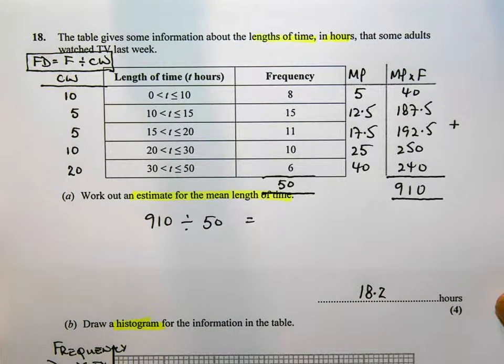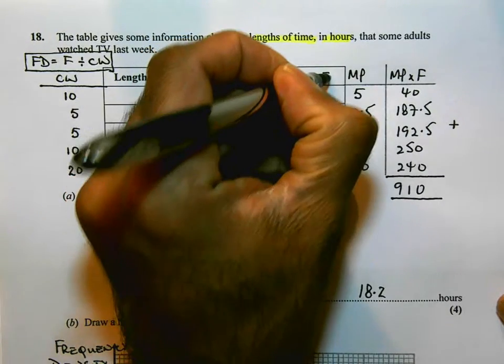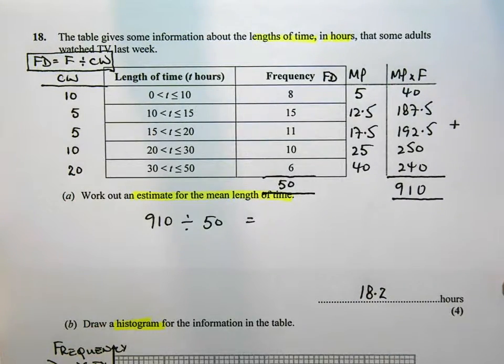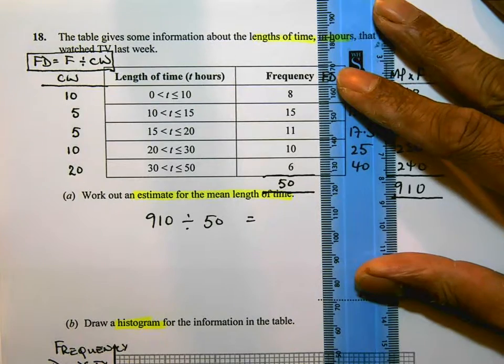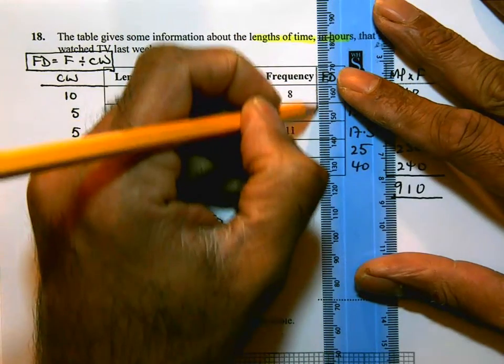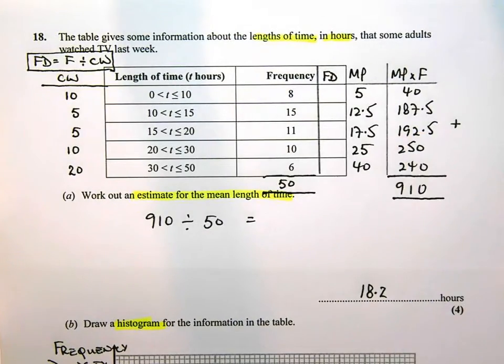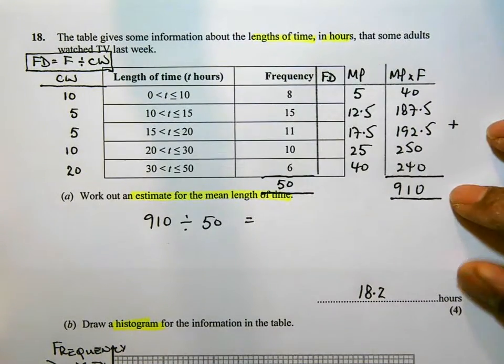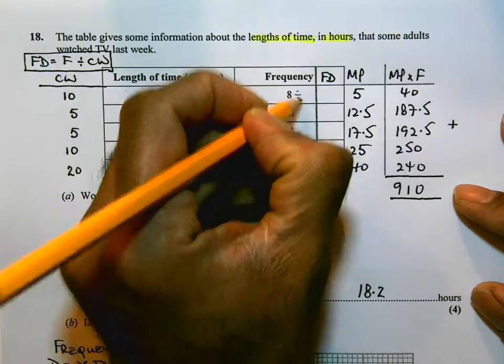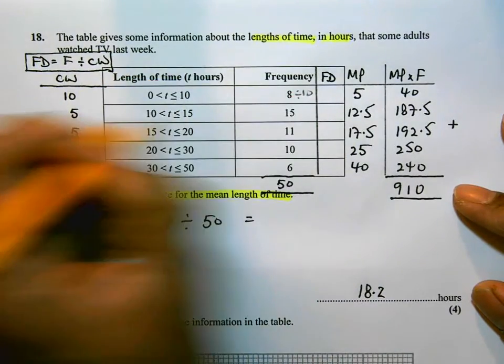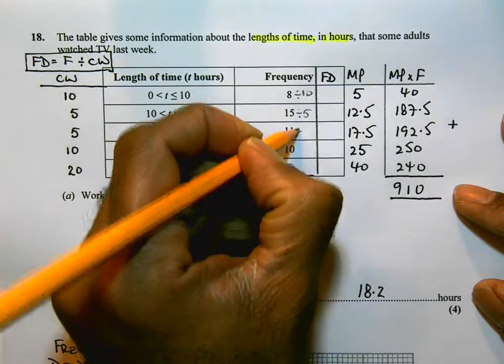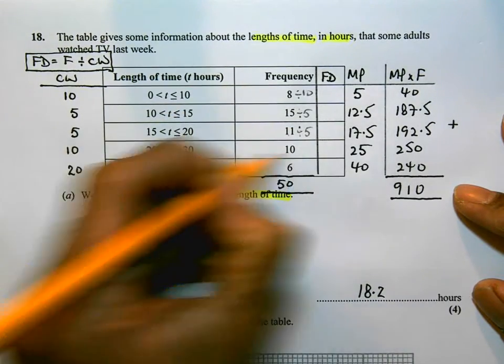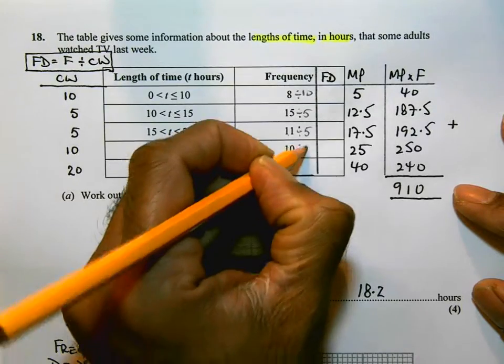I'm going to now find the frequency density, and I'll just put it into the table there. I'll write them in, I'll just put in an extra column so the examiner will be able to see this and you will get credit for this. So I'm going to do frequency divided by class width. So remember, I'm going to do 8 divided by class width is 10, I'm going to do 15 divided by 5, I'm going to do 15 divided by 5, 11 divided by 5, 10 divided by 10, and 6 divided by 20.